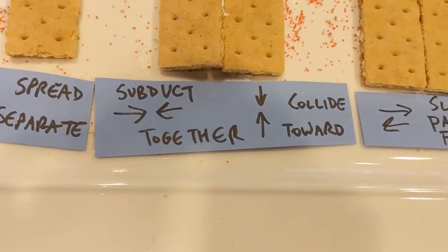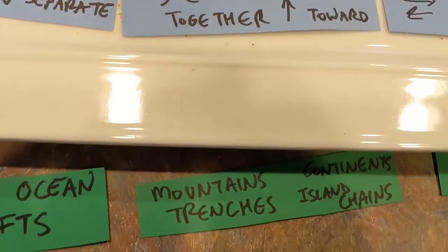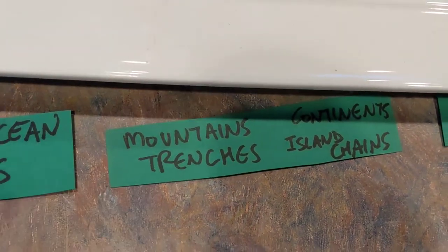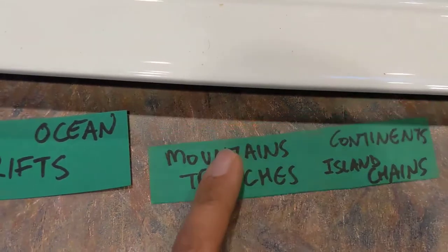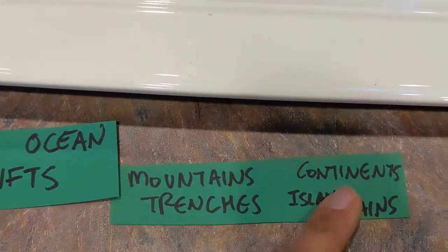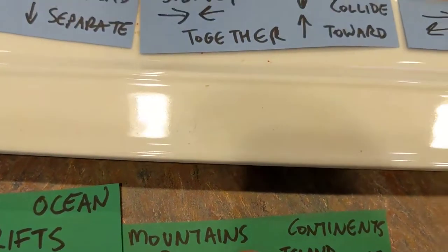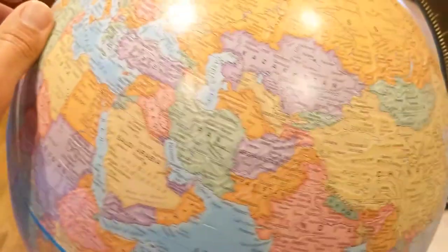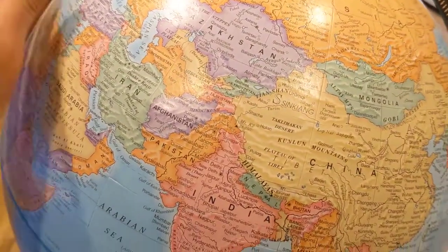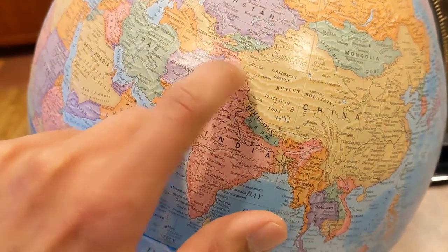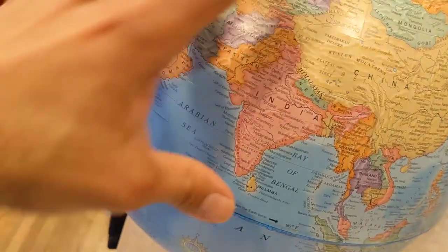At a convergent boundary, plates are colliding towards each other. The things you'll find are mountains, or when they subduct, trenches. Mountains usually start on land, but sometimes they start in the water — and when they do, those mountains aren't visible until they break the surface, forming an island chain. An example of a convergent boundary is the Himalayan mountains between India and China, which includes Mount Everest, the tallest mountain in the world.